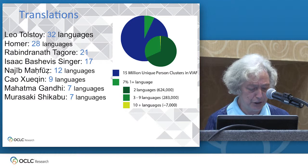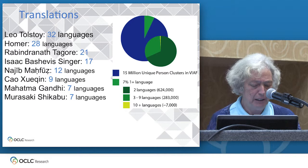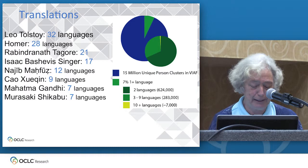The virtual international authority file, an aggregation of 30 agencies worldwide, identifies 15 million unique persons. When we data mine WorldCat, only 7% have written works that have been translated into at least one other language, and only 7,000 have had their works translated into 10 or more languages.